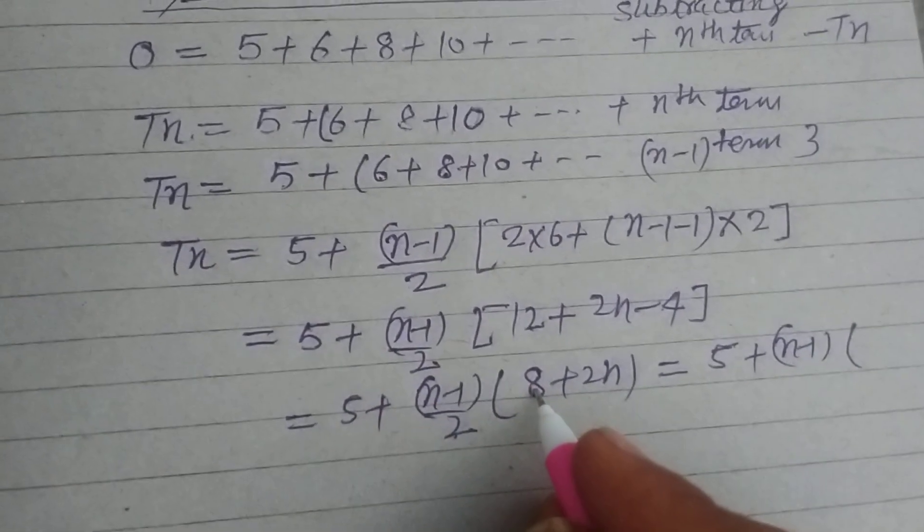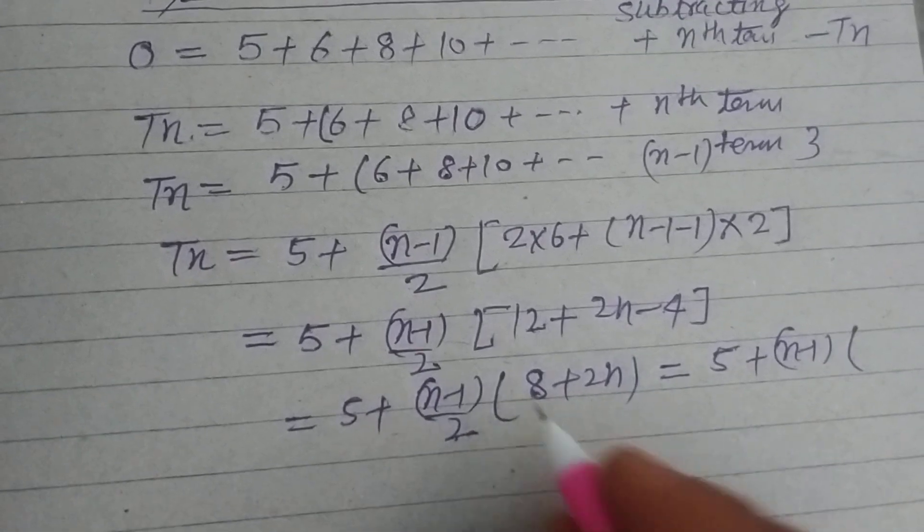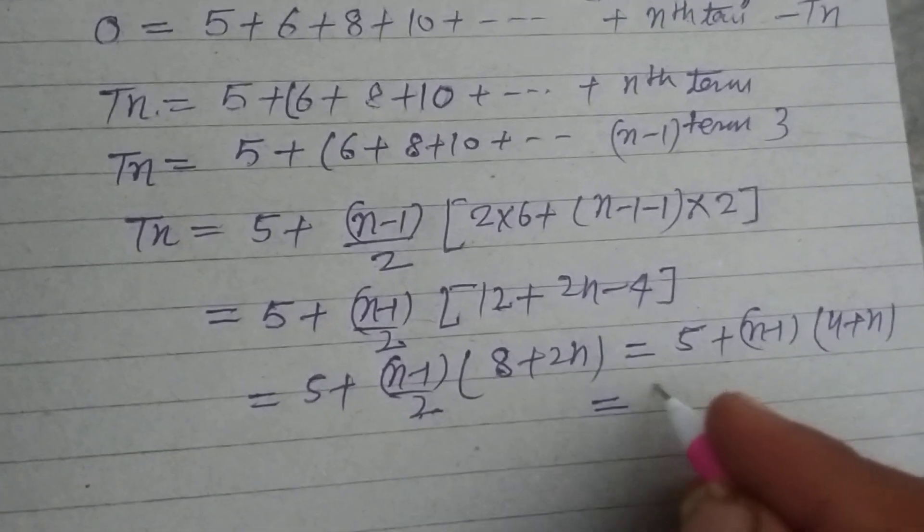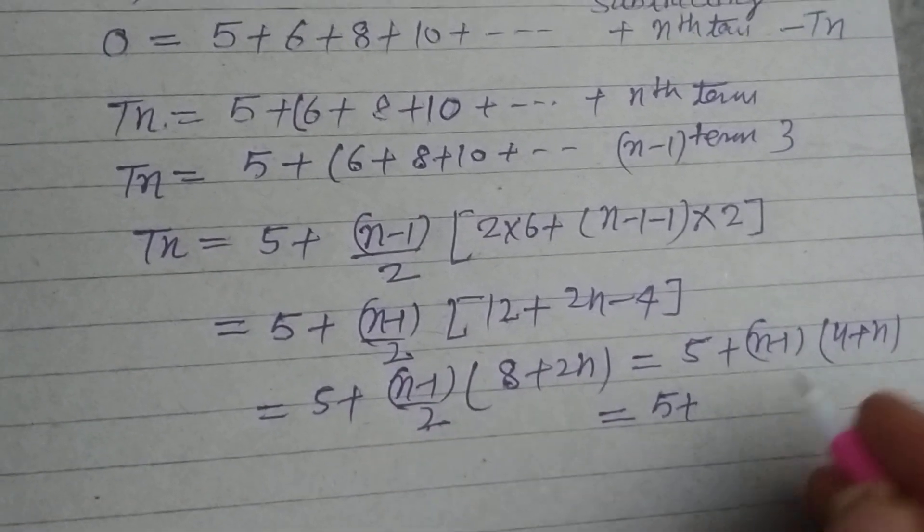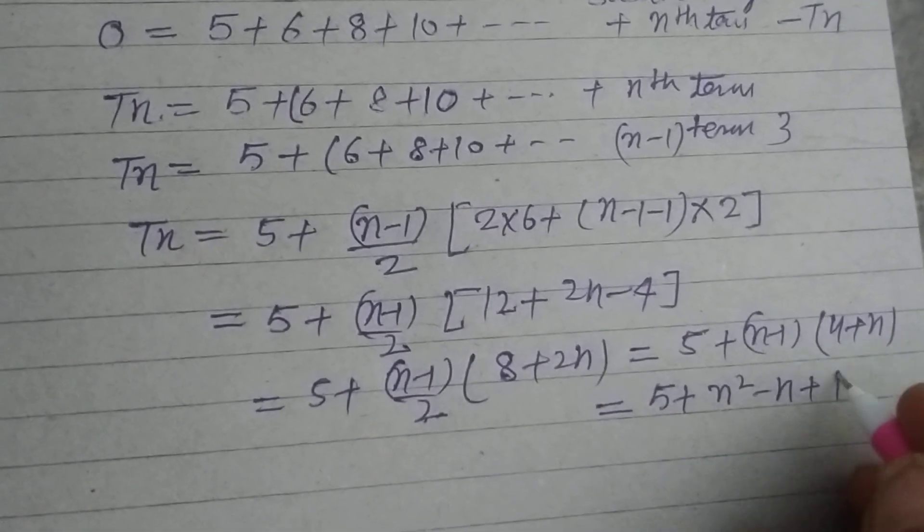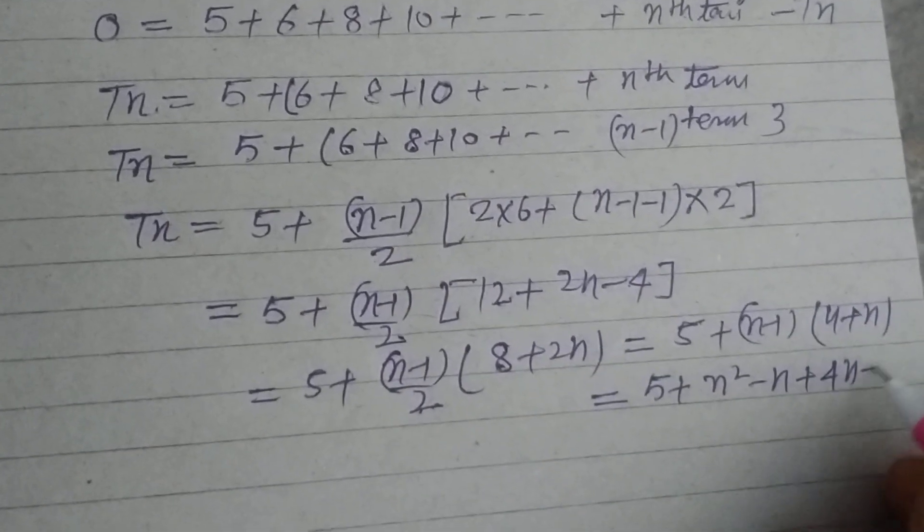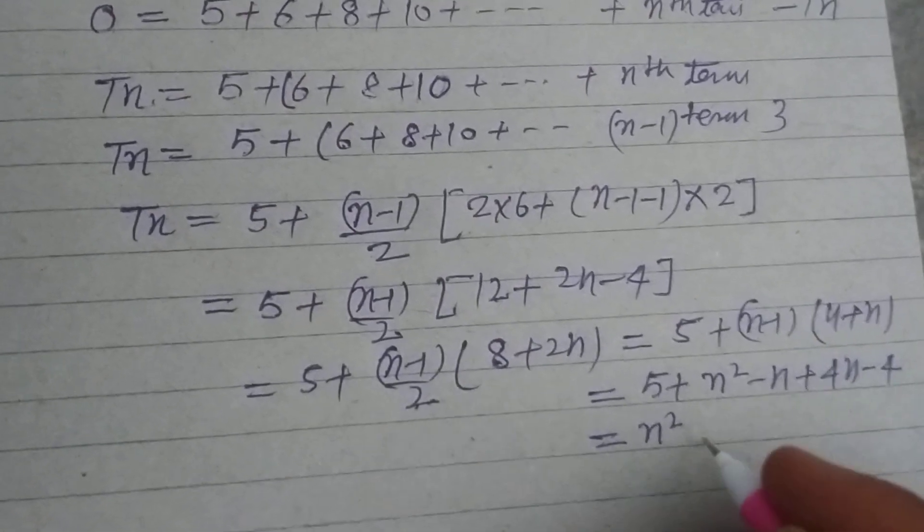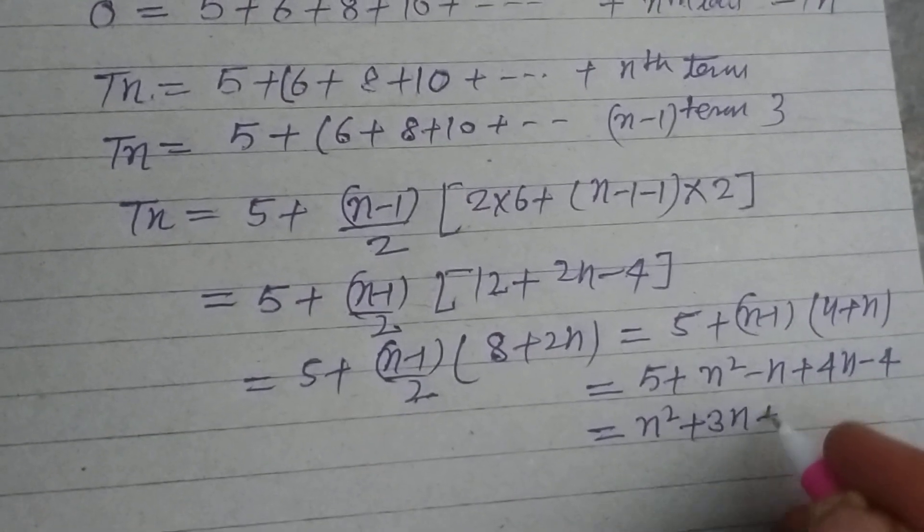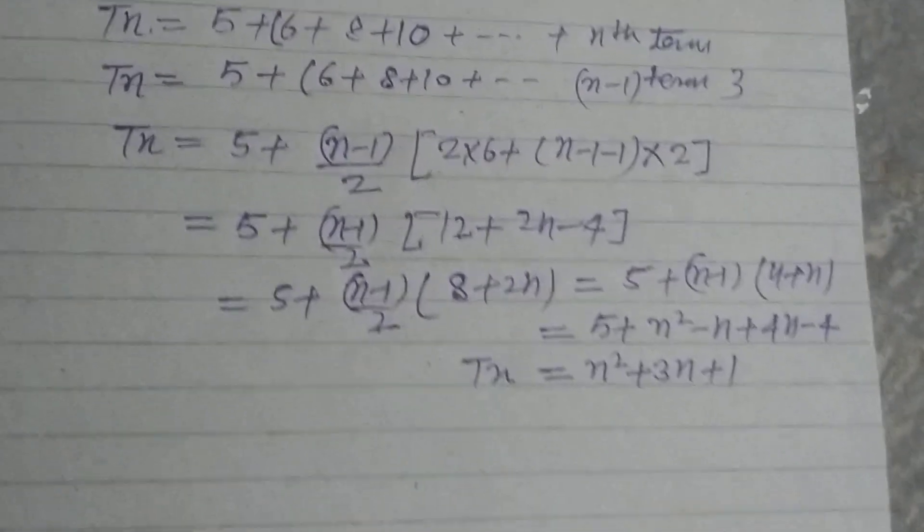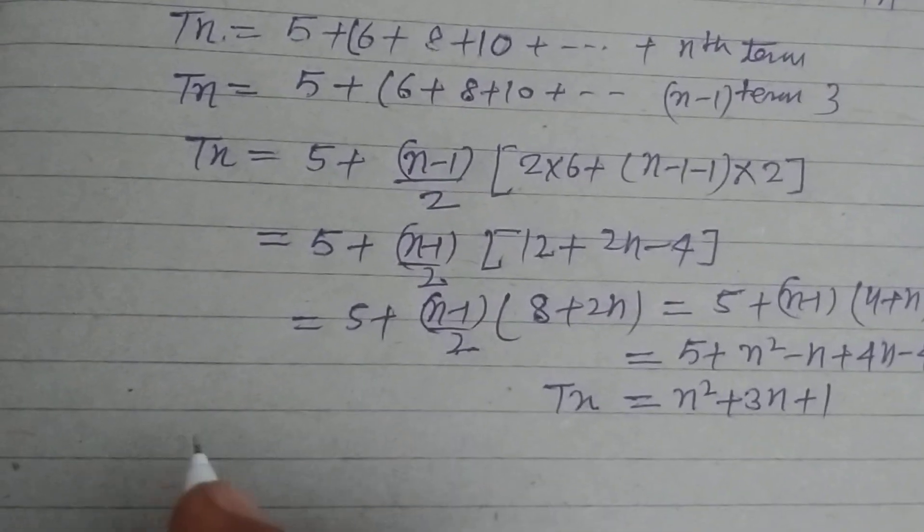So 5 plus N minus 1, on multiplication, 5 plus N square minus N plus 4N minus 4. So this is N square plus 3N plus 1.